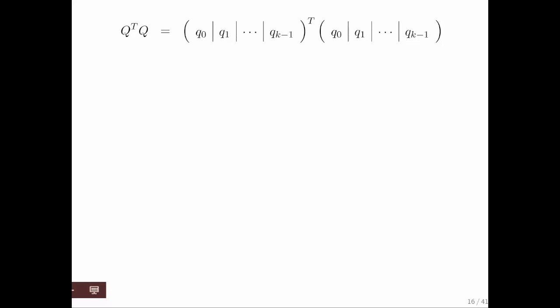If you multiply Q transpose times Q, that's the same as exposing the columns of Q in each of these matrices. If you then transpose the first one, you get this right here.